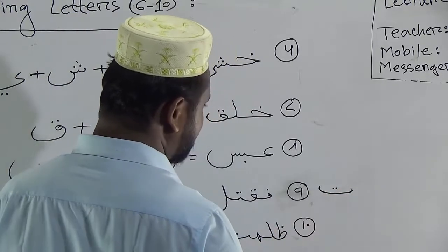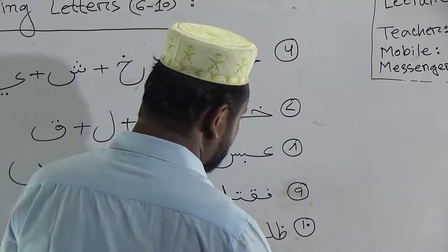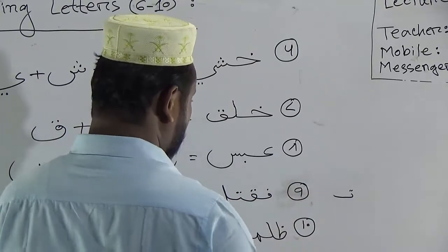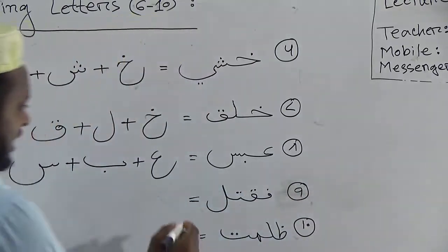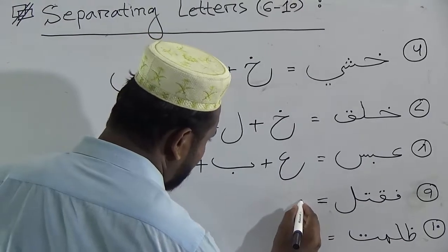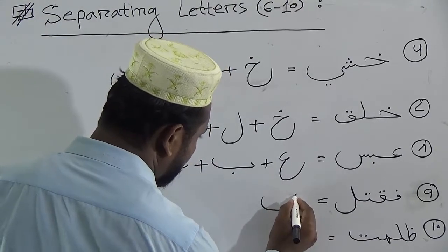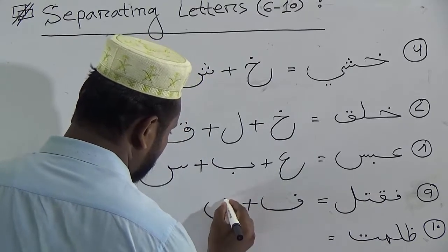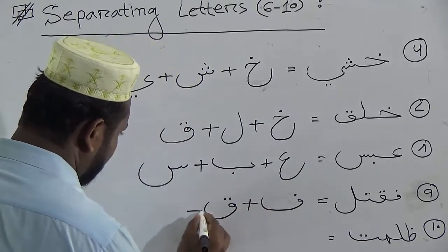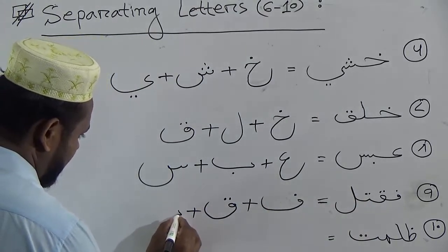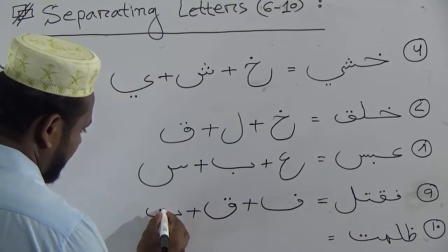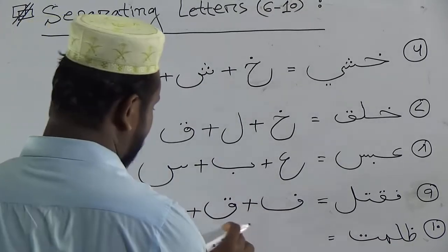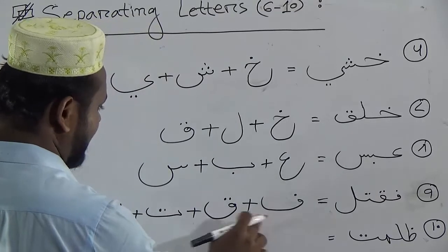So this is thaa. There are four letters in this word: the first letter is fa, plus second letter is kof, and third letter is thaa, and last letter is laam. Fa plus kof plus thaa plus laam — fa, kof, ta, laam. Number 10 and last one: zulumati.